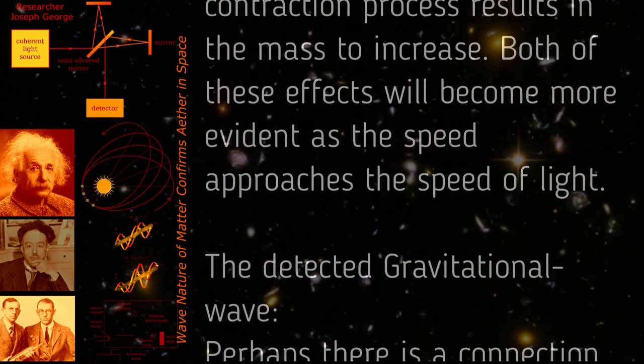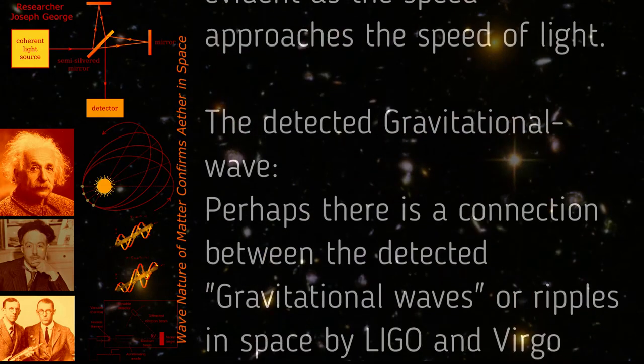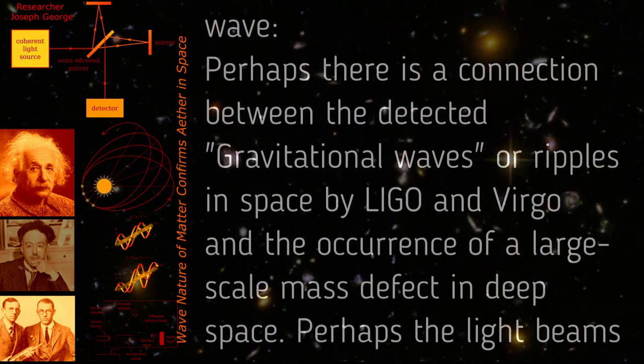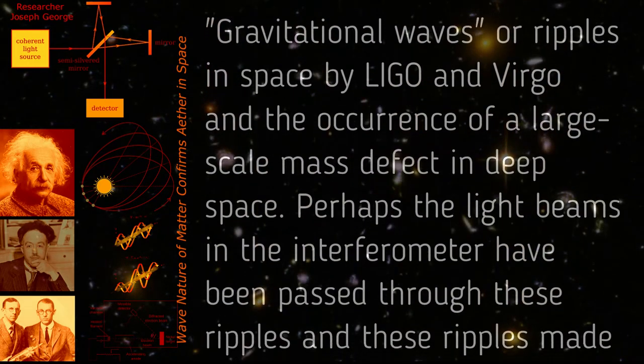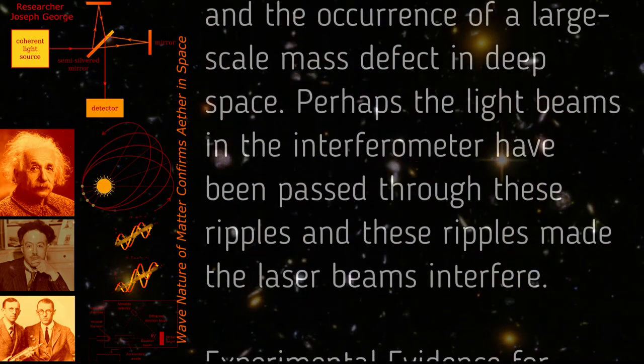The detected gravitational wave: Perhaps there is a connection between the detected gravitational waves or ripples in space by LIGO and Virgo and the occurrence of a large-scale mass defect in deep space. Perhaps the light beams in the interferometer have been passed through these ripples and these ripples made the laser beams interfere.